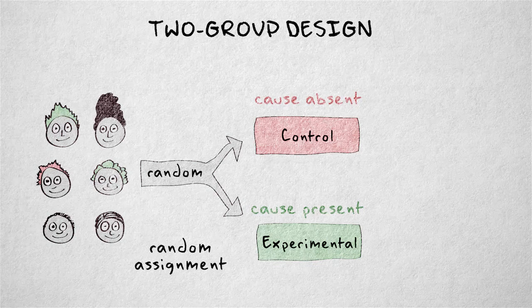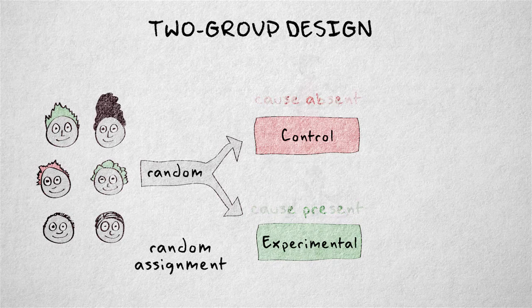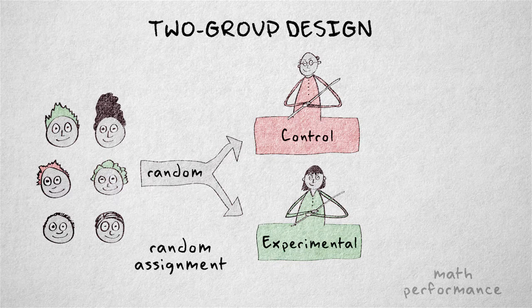The independent variable could also differ between the conditions in amount or kind. For example, if we're investigating the effect of male versus female math teachers on math performance of boys.